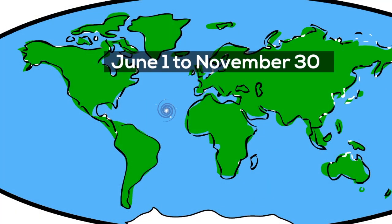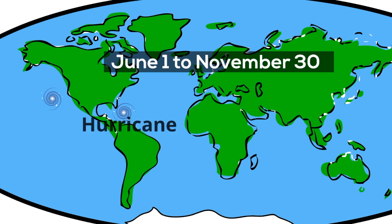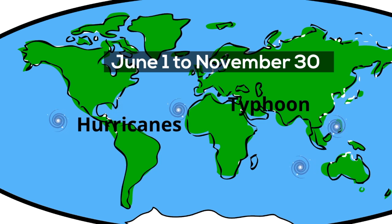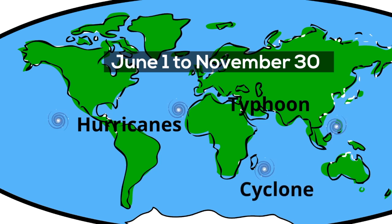Hurricane season begins on June 1st and ends November 30th, although hurricanes can and have occurred outside of this time frame. In the North Atlantic and North Pacific, the term hurricane is used. However, in the Northwest Pacific, they are called typhoons, and in the South Pacific and Indian Ocean, the same storms are called tropical cyclones.